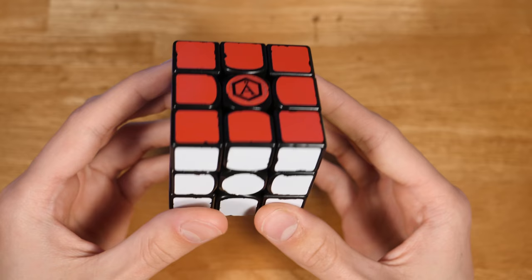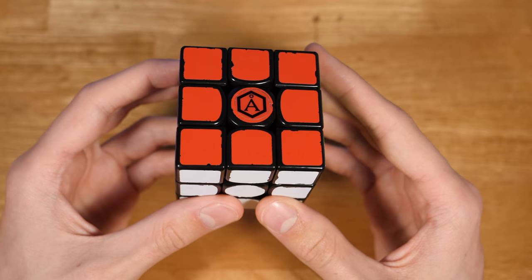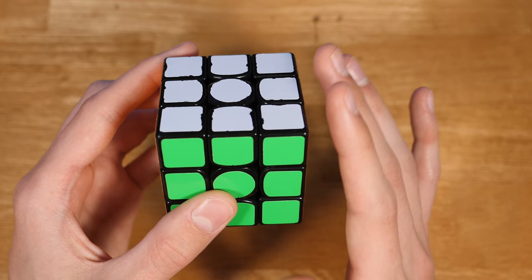What's up guys, it's LaserMonkey. Welcome back! Today Felix Zemdegs broke the 3x3 world record with a time of 4.22 seconds, and we're just going to take a look at this solve real quick. This is an insanely efficient solve.